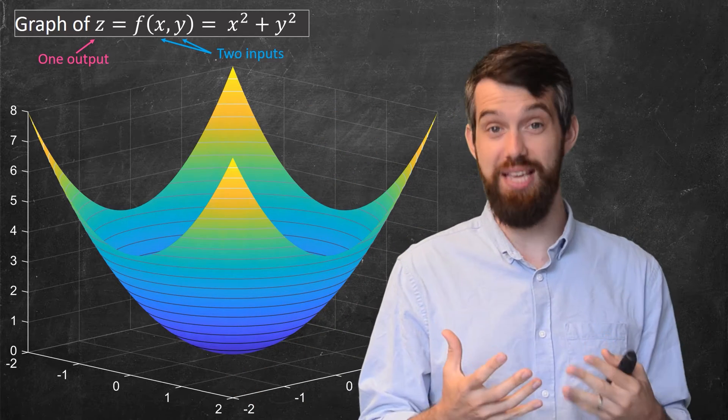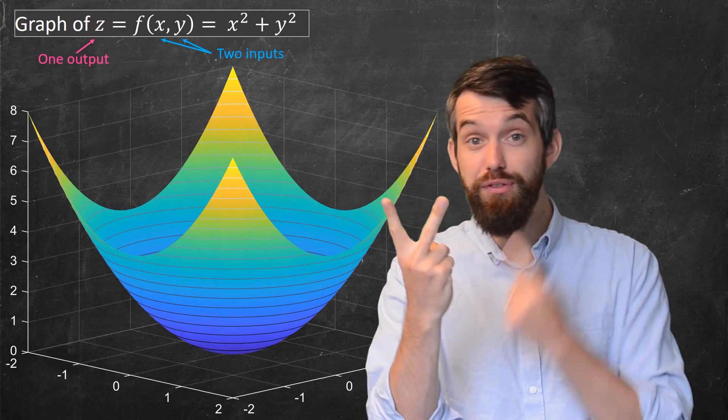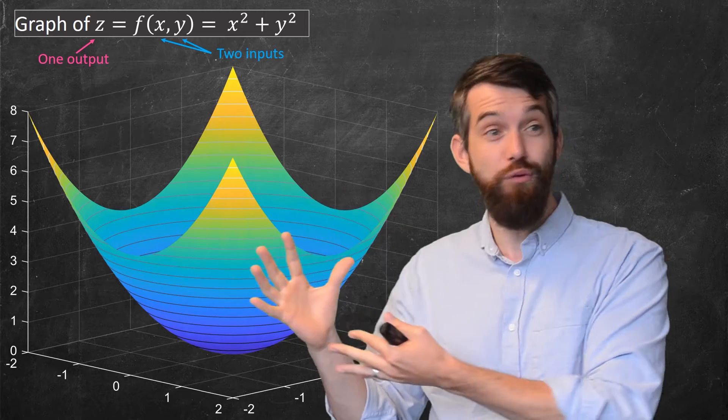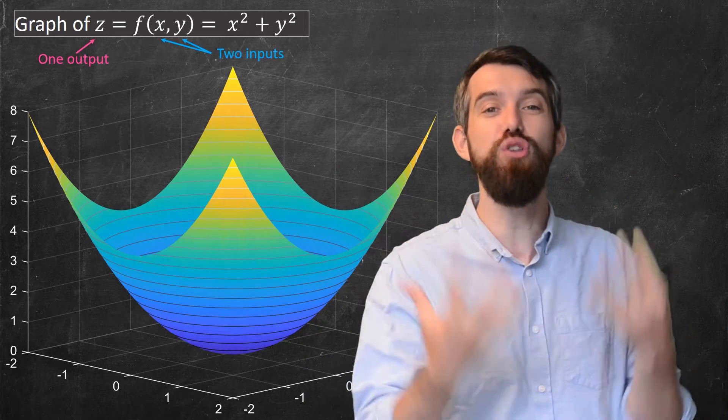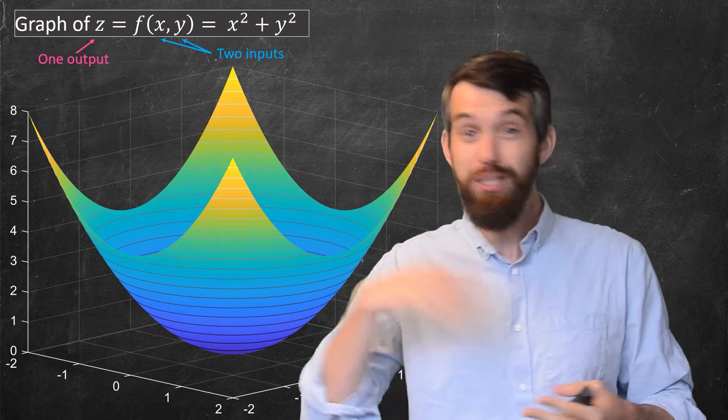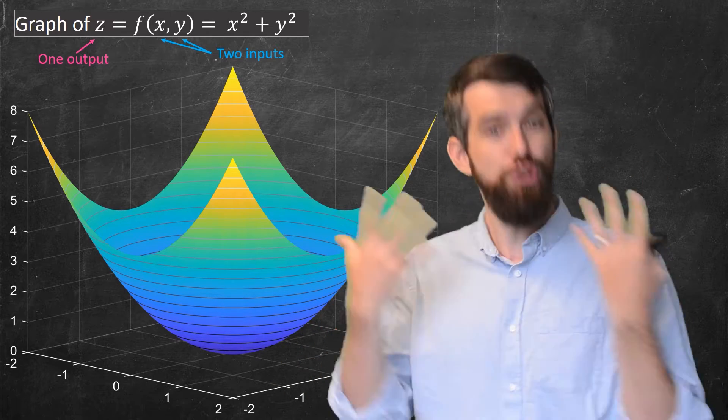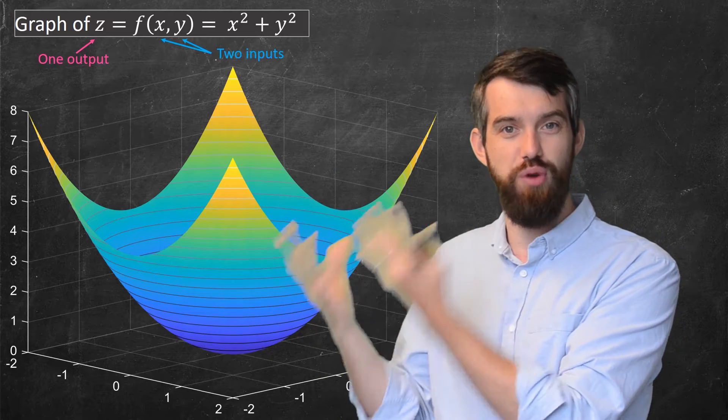Now, there's one nice thing about having two inputs and one output, is that the sum of two and one is three, and this three-dimensional graph, well, we live in three dimensions, we can visualize things in three dimensions. It's possible to have more inputs, and it's also possible to have more outputs. That's all entirely okay, it's just you can't graph it quite as nicely in three dimensions.